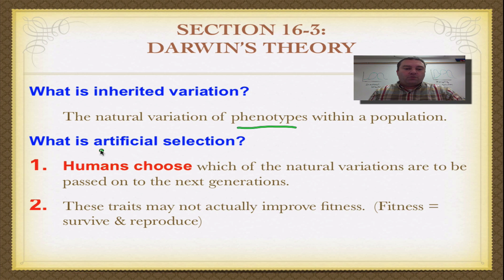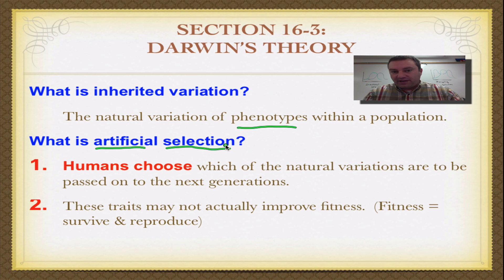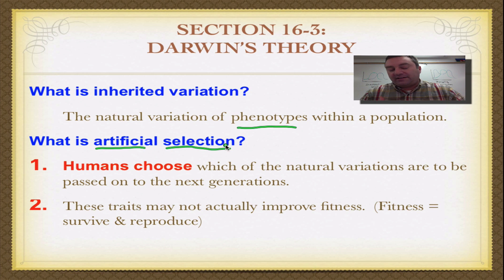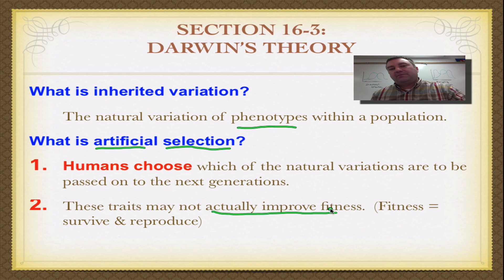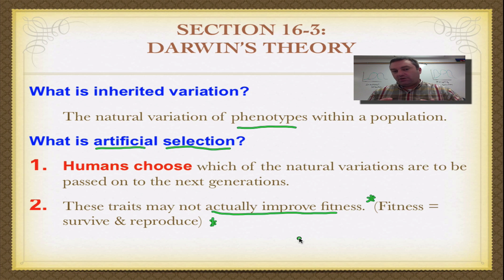Darwin was also well aware of a concept called artificial selection — a process where human beings choose which of the natural variations are passed on to the next generation. This has happened whenever humans have done agriculture: they've selectively bred the plants they want to grow, and selectively bred livestock for more milk or more meat. The traits that humans choose do not actually improve fitness. Fitness is defined as the ability to survive and reproduce — in nature, the winners pass their genes to the next generation.